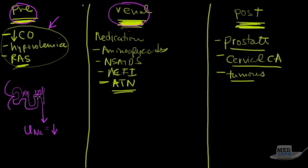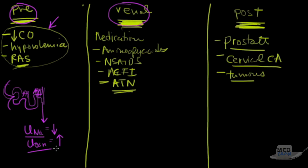As sodium is reabsorbed, water follows it. So the urine osmolarity in pre-renal will be high — what's left in the urine is concentrated because sodium and water have been pulled back into the blood. You're left with urea and other waste products at high concentration, making the urine very concentrated.